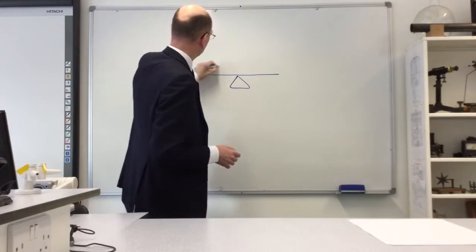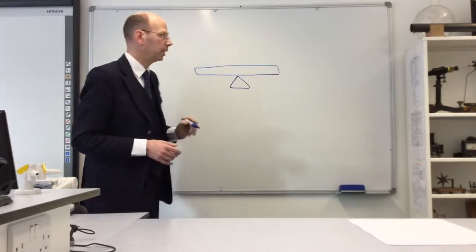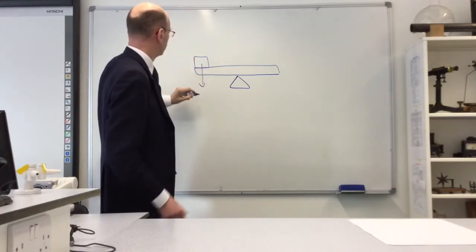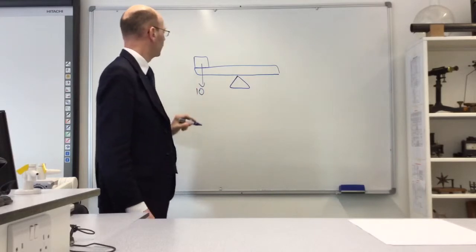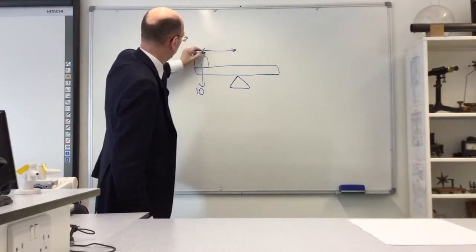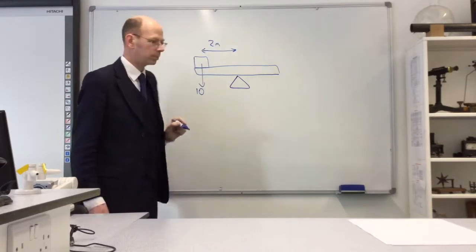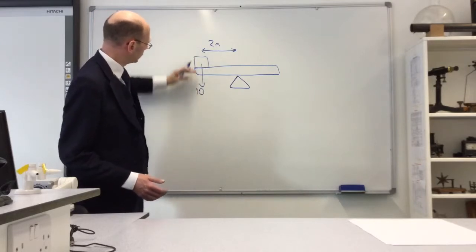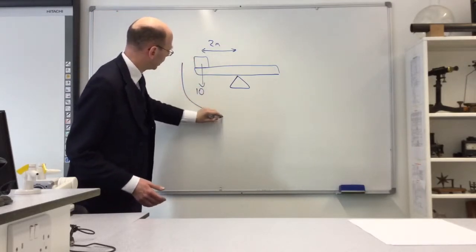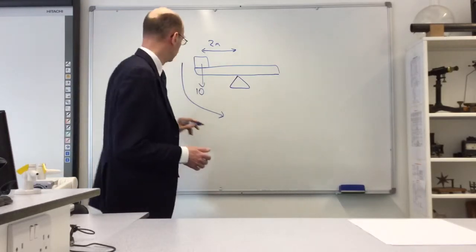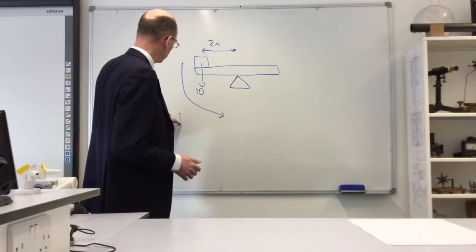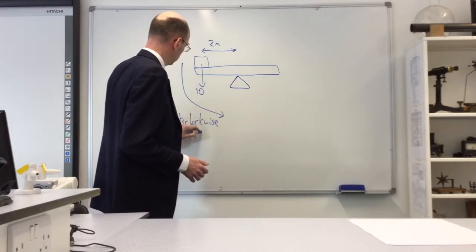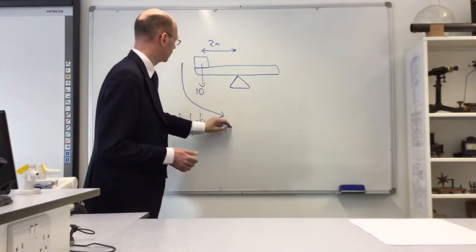Let's imagine we've got a beam with a pivot in the middle. If you put a weight on this side—say 10 newtons at a distance of 2 meters from the pivot—obviously that weight will make the bar rotate in that direction. It's going to rotate anti-clockwise.